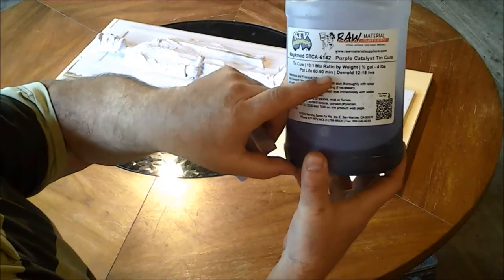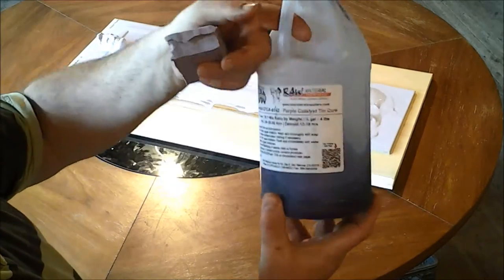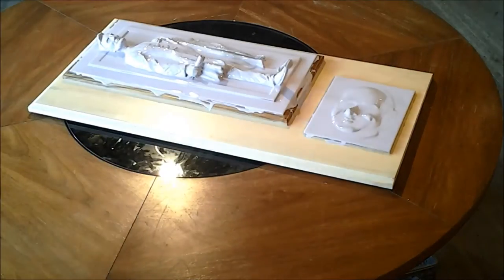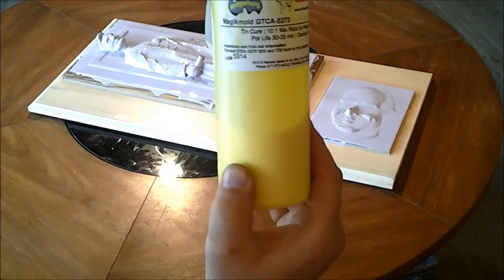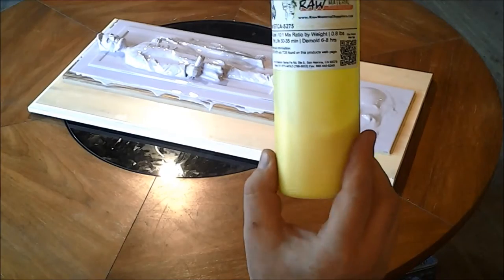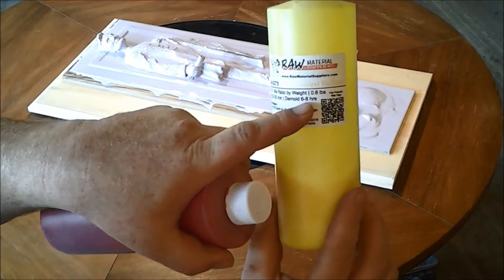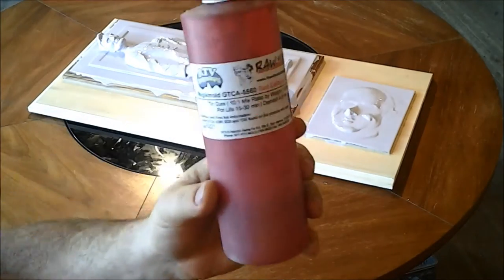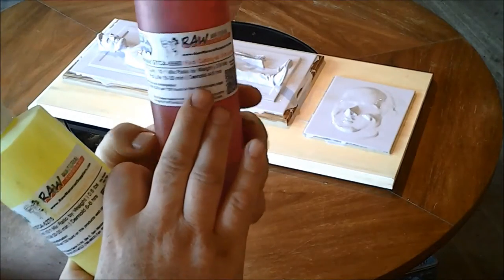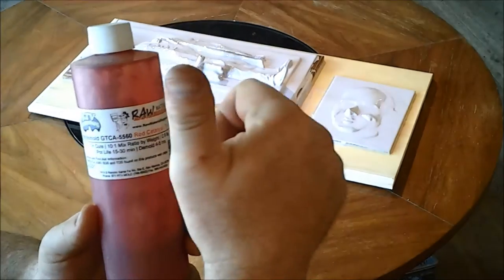The rubber uses different catalysts to speed up at set time. This one's the slowest, the purple, at 60 to 90 minutes. The yellow is 30 to 35 minutes. And then the red is the fastest set time of 15 to 30 minutes. They can all be mixed to get the time you need.